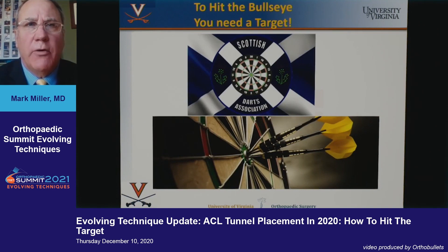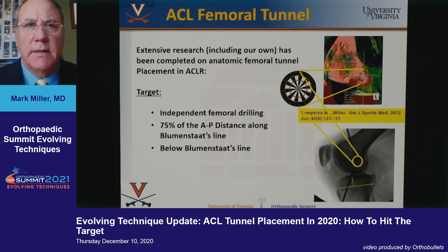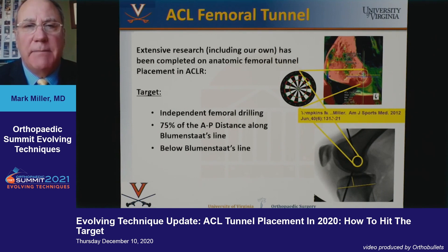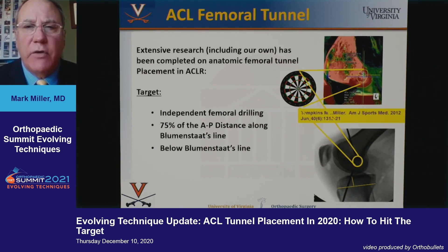In order to hit the bullseye, you need a target. We've done extensive research, as have others, to figure out where the femoral side of the ACL should be. If you do independent femoral tunnel drilling — that means either an accessory medial portal, outside in, or a flexible reamer — then you should have a fluoroscopic view that shows your tunnel about 75% of the way across and below Blumensaat's line.